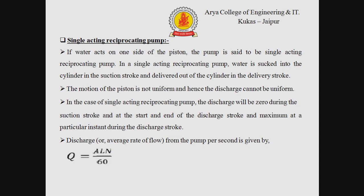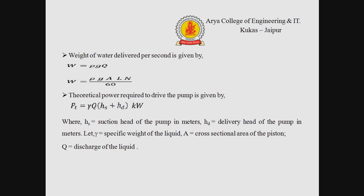Now we discuss the single acting reciprocating pump. If water acts on one side of the piston, the pump is said to be a single acting reciprocating pump. Water is sucked into the cylinder during the suction stroke and delivered out of the cylinder during the delivery stroke. The motion of the piston is not uniform and hence the discharge cannot be uniform. The discharge will be zero during the suction stroke and at the start and end of the delivery stroke, and maximum at a particular instant during the delivery stroke. The discharge from the pump per second is given by Q = ALN / 60, where A is the cross-sectional area, L is the length, and N is the RPM.